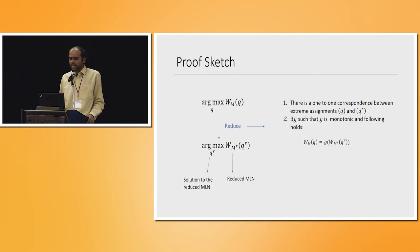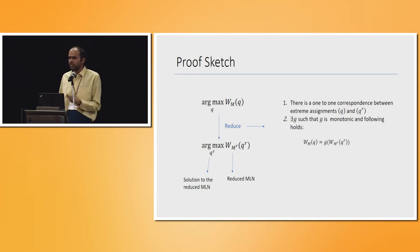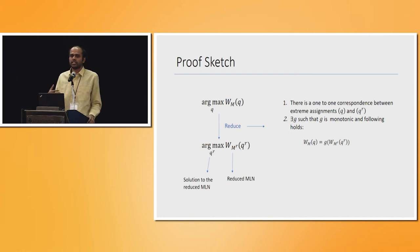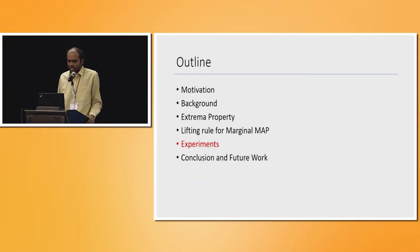The proof involves monotonicity arguments and a correspondence between the solution of the reduced theory and the original theory. We show that the relationship between the two objectives is monotonic, which lets us prove correctness of the reduction.